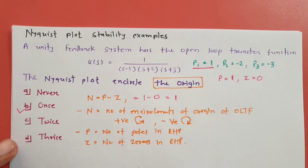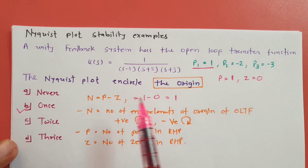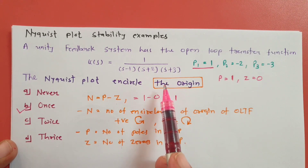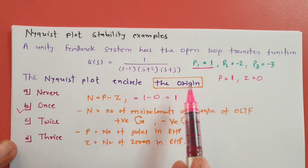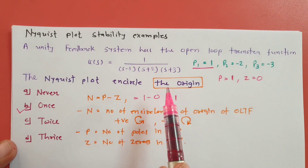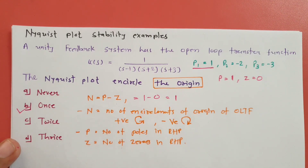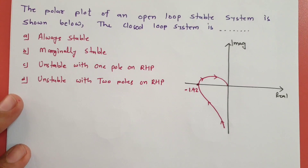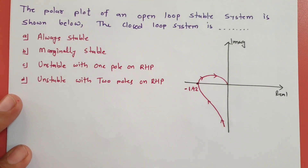One should know the basic difference between encirclement around the origin and encirclement around the critical point −1,0 in the Nyquist plot. Now let us look at one more interesting example.